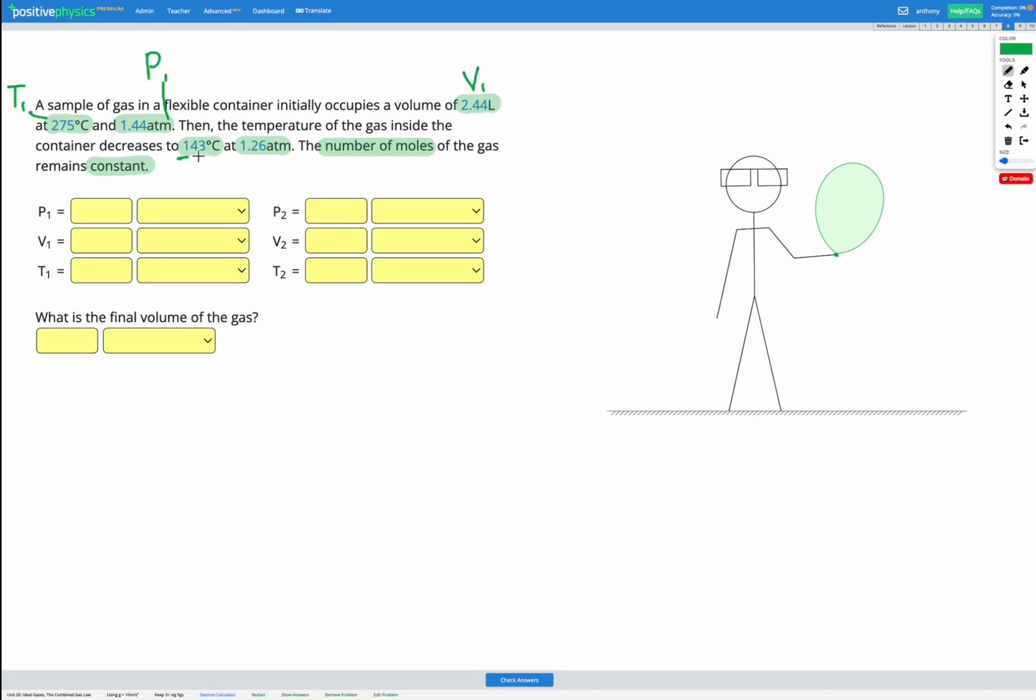We also have a final temperature T2 and a final pressure P2. And in this question, we're trying to find the final volume of the gas, which is our V2.